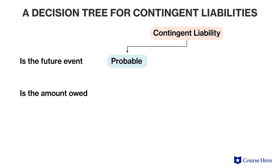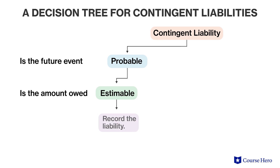A probable liability is one for which the probability of the liability becoming actual is more likely than not, and the liability amount can be estimated. An example of a probable liability is a lawsuit for which legal counsel to a company provides a reliable opinion that it is more likely than not that the company will have to pay some money.